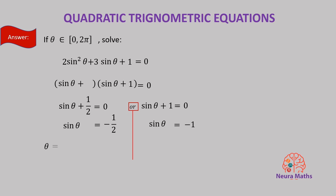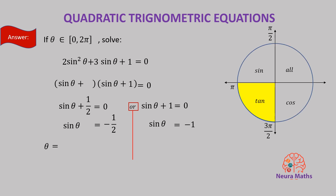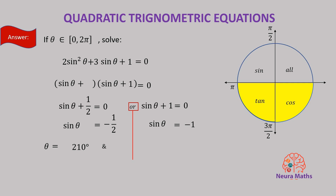Now what angles have a sine of negative one-half? The angles whose sine is negative one-half exist in the third and fourth quadrant. The acute angle whose sine is one-half is 30 degrees. So the two angles whose sine is negative one-half are the reflections of 30 degrees in quadrant 3 and quadrant 4, which are 180 plus 30 and negative 30 degrees — that is, 210 degrees and 330 degrees.